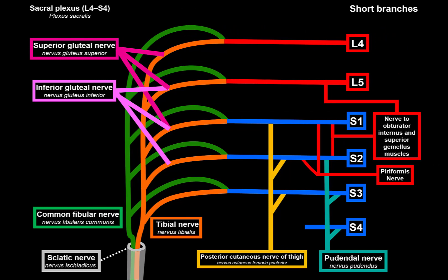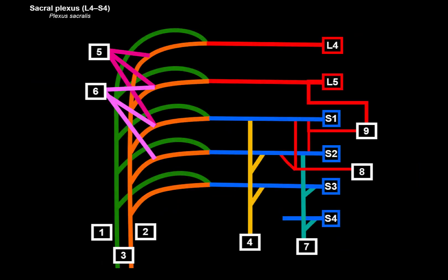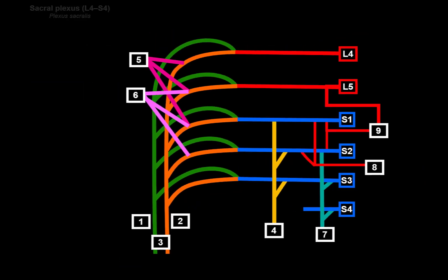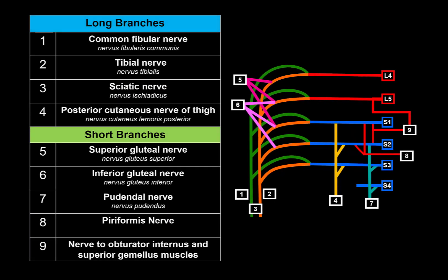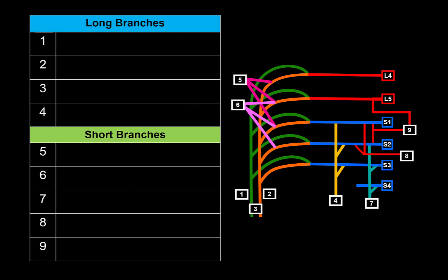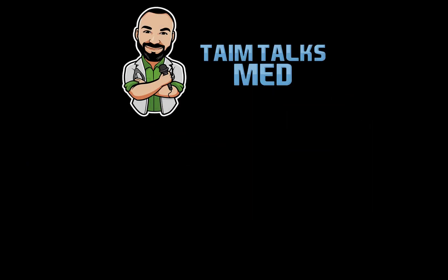That sums up the sacral plexus. Now for a quick quiz: the labels on the diagram will be replaced with numbers and the names placed in a table, then hidden. Can you name number one, number two, and describe what numbers three and four supply? If you can do that, you have a good grasp of this topic.